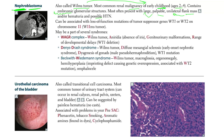Wilms tumor can be associated with a loss of function mutation of tumor suppressor genes WT1 or WT2 — Wilms tumor 1 and Wilms tumor 2 — both located on chromosome 11.